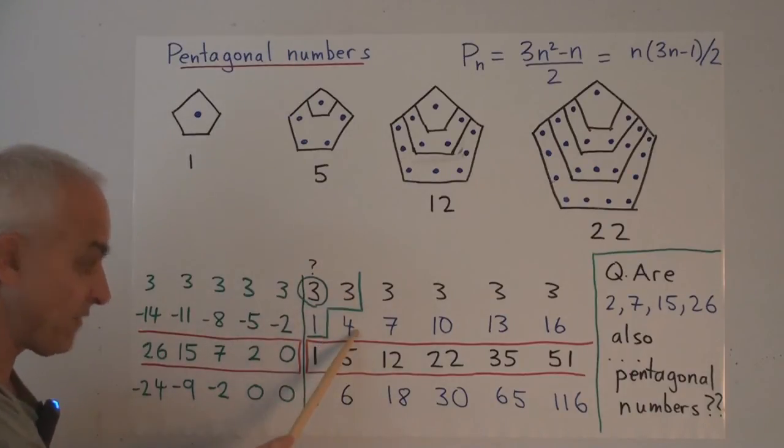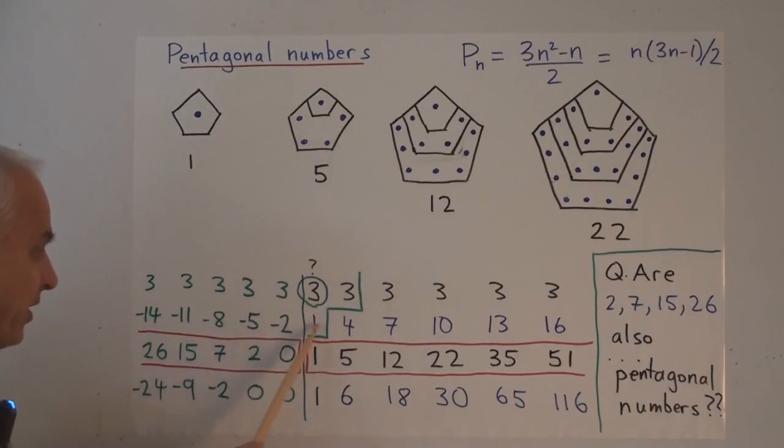Because this plus this has got to be this. And then this has to be minus 2 because this plus 3 has to equal 1. That's forced. And then that's forced and that's forced and we're getting going down by 3 here.